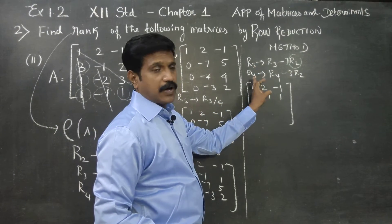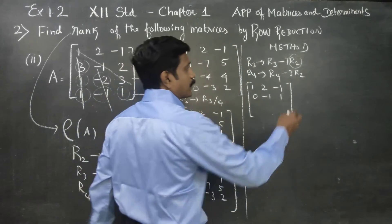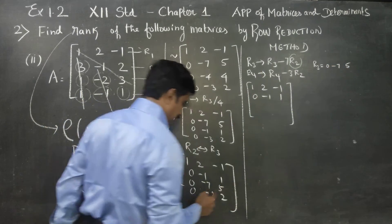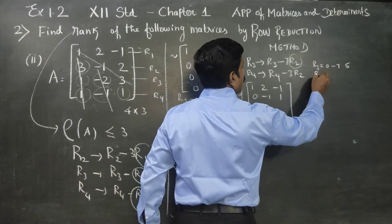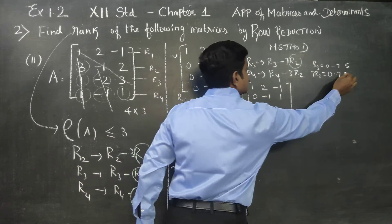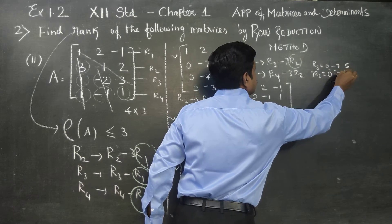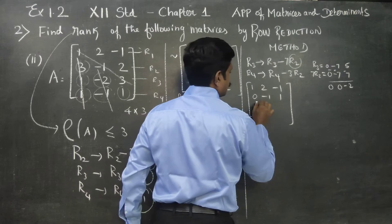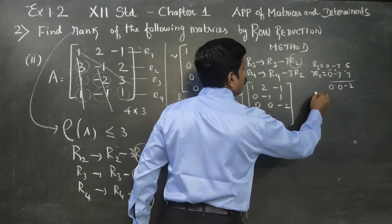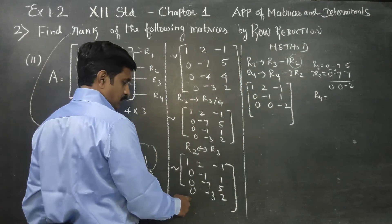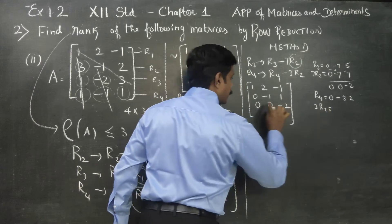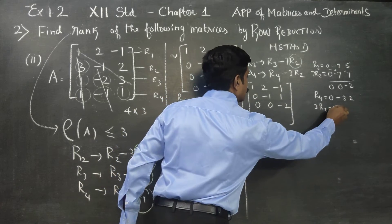R1, R3, R4: what is my R3? 0, minus 7, 5. What is my R2? R2 minus 7 times — 0, minus 7, 7. Subtraction: minus plus minus, 0, 0, minus 2.